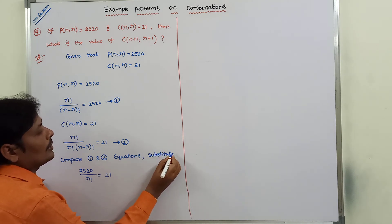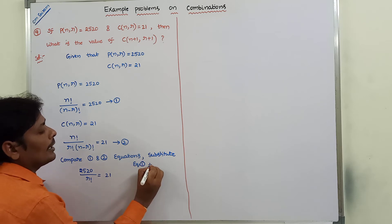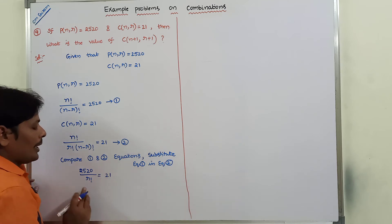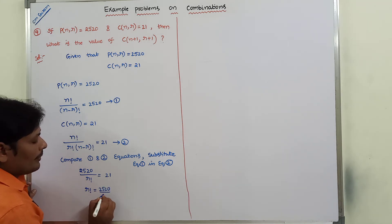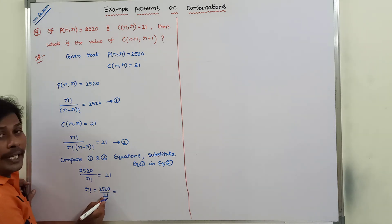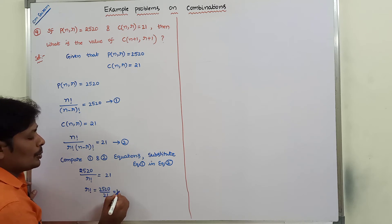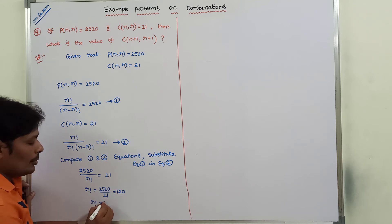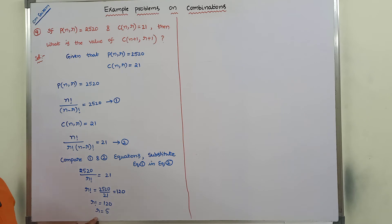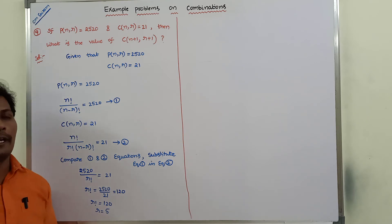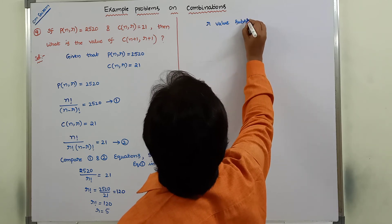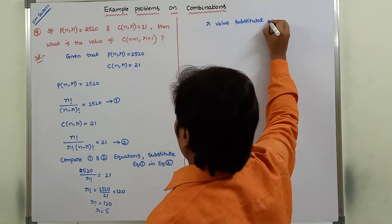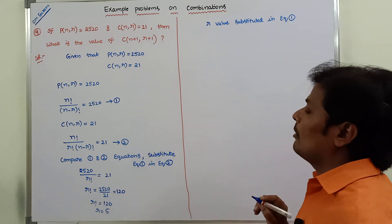After substituting equation 1 into equation 2, we get r factorial equals 2520 divided by 21. Dividing: 21 goes into 2520 — 21 times 120 equals 2520 — so r factorial equals 120. Since 5 factorial equals 120, r equals 5.